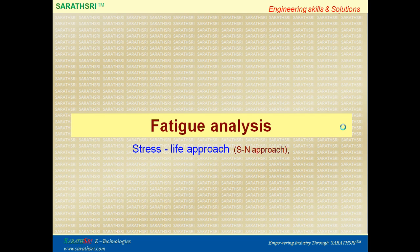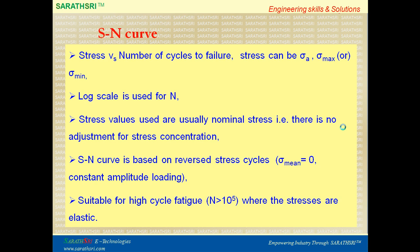In the stress life approach, stress versus number of cycles to failure is plotted. Stress can be sigma_a, sigma_max, or sigma_min. Stress ratio R = -1. A logarithmic scale is used for number of cycles. Stress values used are normally nominal stress with no direct adjustment for stress concentration. The SN curve is based on repeated reverse stress cycles — stress ratio equal to minus 1. As high cycle fatigue, if the number of cycles is greater than 10^4 or 10^5 in real engineering, then that kind of component falls under the high cycle fatigue zone. There are two types of SN curves: one with a definite endurance limit and one indefinite.